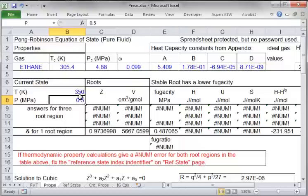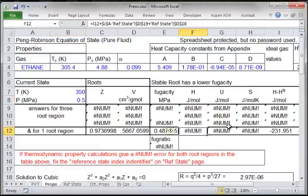You can see that there is one real root under these conditions, but you can see that the enthalpies and so forth are not being calculated because there's a problem with the reference state. I'll let you read that red note on your own.